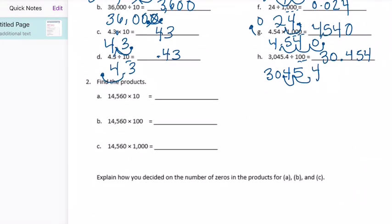Number two, find the products. Product, answer to a multiplication problem. We have 14.568 times 10. Put my decimal point at the end. Move it over one place, and we get 145,680.